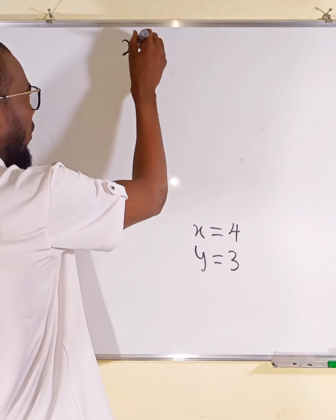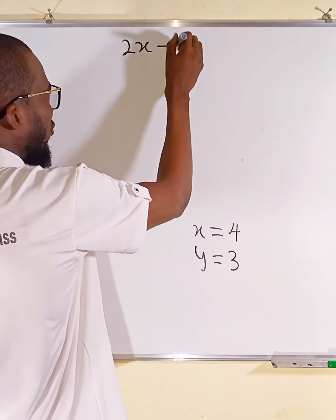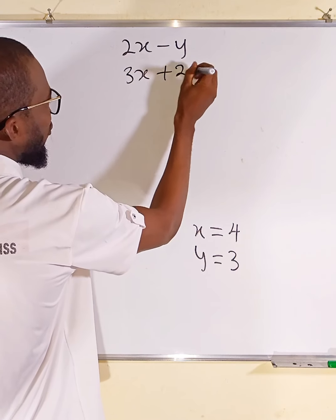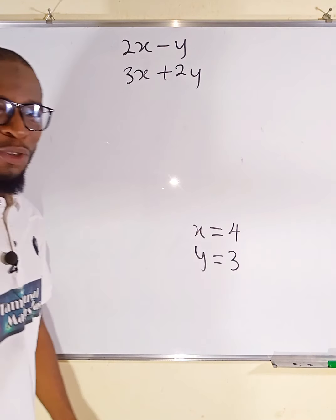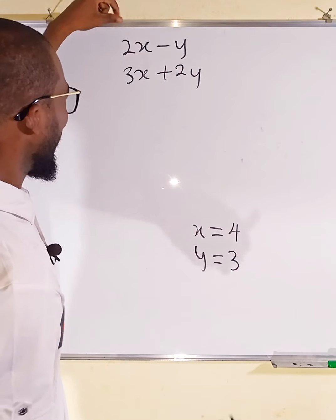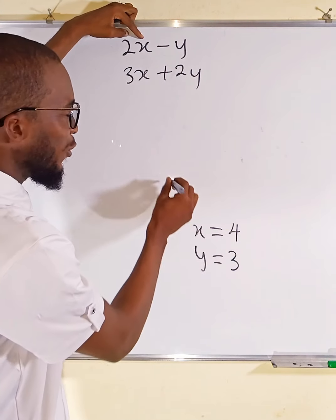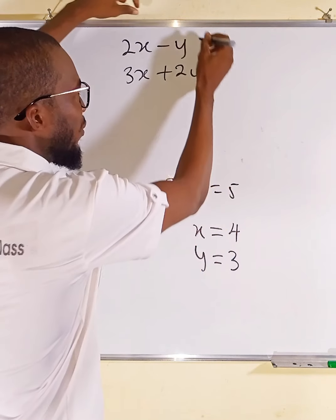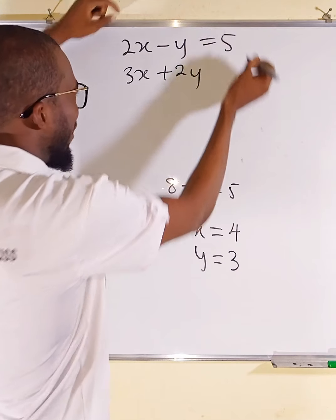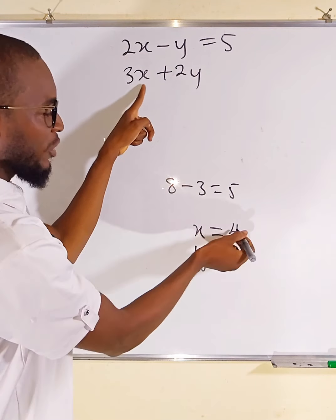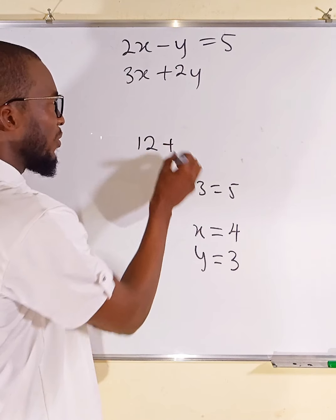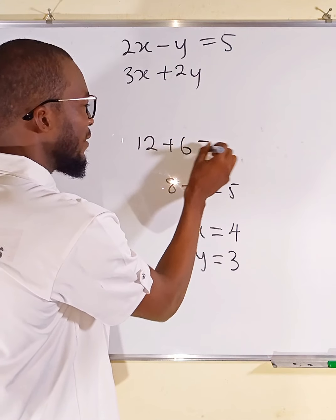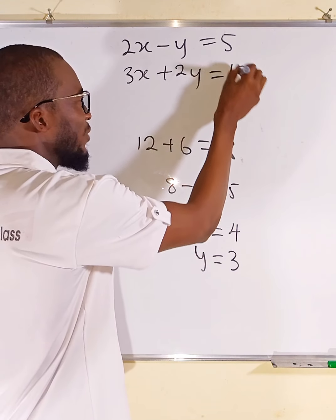You may decide to say: 2x minus y, or 3x plus 2y. We are going to substitute the known values. 2 multiplied by 4 is 8, minus y which is 3, equals 5 — so you write 5 here. Then 3 multiplied by 4 is 12, plus 2 multiplied by 3 is 6, and this is equal to 18 — so he sets this equal to 18.